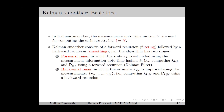The Kalman Smoother consists of a forward recursion, which is the filtering stage, followed by a backward recursion, which is the smoothing stage. The algorithm has two stages. The first is called the forward pass, in which the state xk is estimated using the measurement information up to time instant k. Here we compute x̂k|k and Pk|k using a forward recursion, which is basically the Kalman filter algorithm.